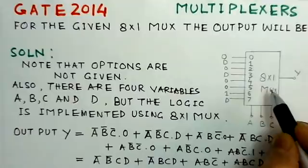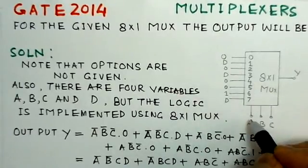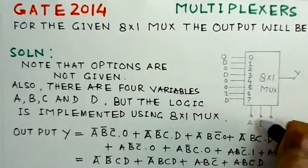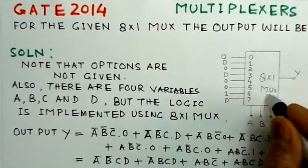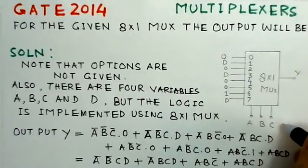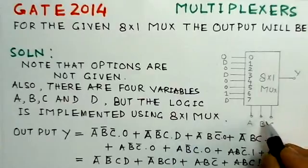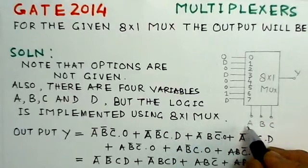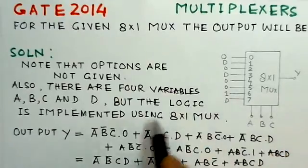Actually, if you are using 4 variable implementation, you actually need 16 to 1 multiplexer, but you can also do it by 8 to 1 multiplexer as well. That is being done in this particular problem.